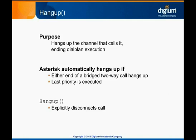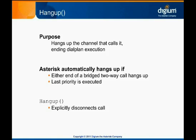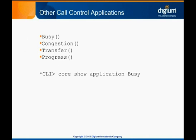Normal dial plan execution stops when a call is hung up. It's good practice to have hangup be the last application for each extension in your dial plan. Pattern matches and dynamic routing can cause Asterisk to execute priorities you don't intend, so explicitly calling a hangup priority at the end of an extension helps prevent this. Other call control applications worth knowing about include the busy, congestion, transfer, and progress applications. We recommend you run core show application for each one to learn its behavior and syntax. Next, we'll discuss call services applications.